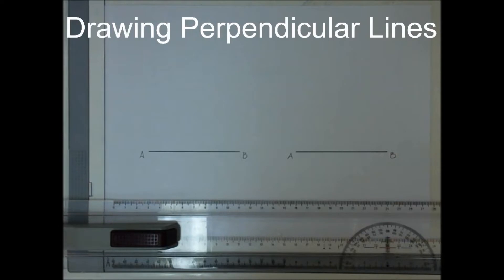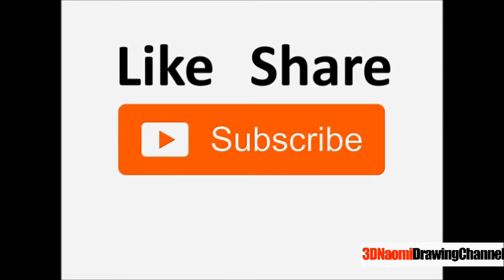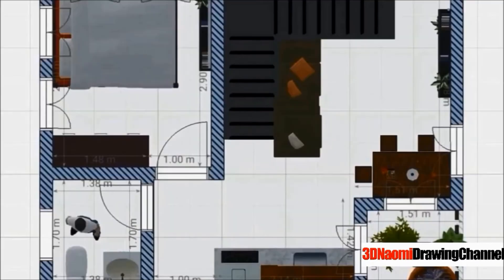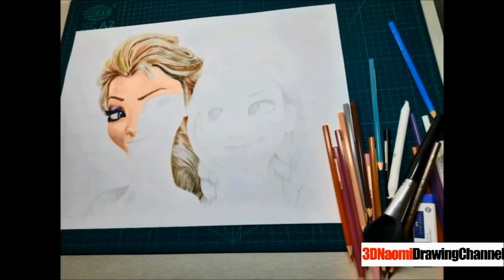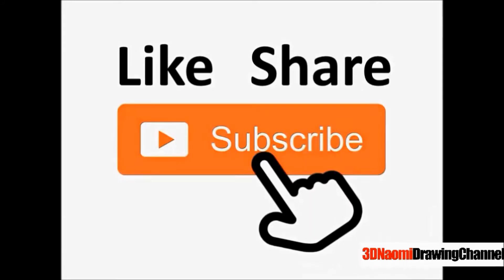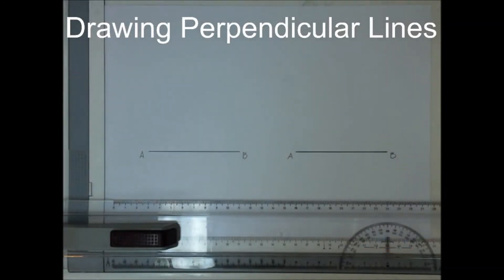Good day, everyone. Welcome to another video tutorial on basic geometrical construction. Today, we will talk about how to draw perpendicular lines. Perpendicular lines are two lines that intersect with each other, forming a 90-degree angle or corner.